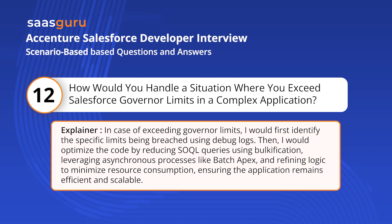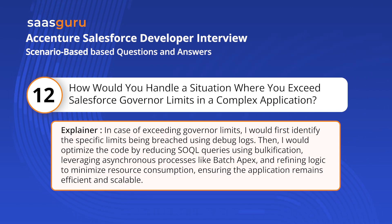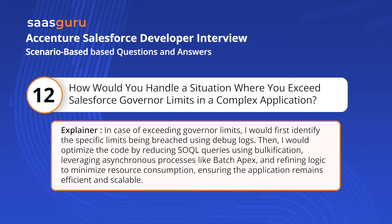Then, I would optimize the code by reducing SOQL queries using bulkification, leveraging asynchronous processes like Batch Apex, and refining logic to minimize resource consumption, ensuring the application remains efficient and scalable.